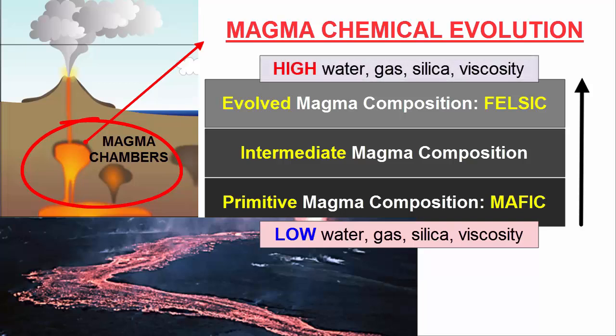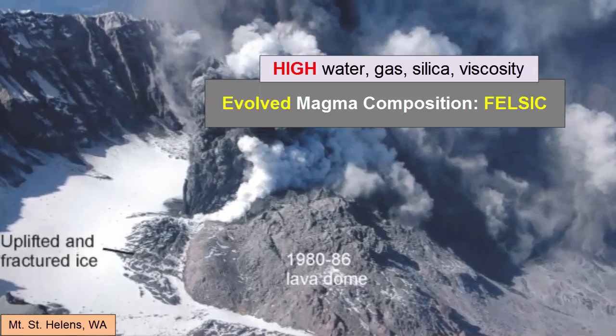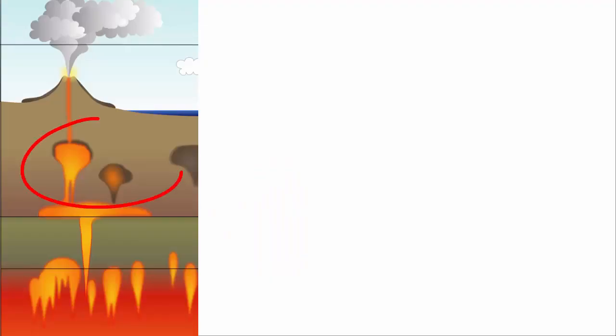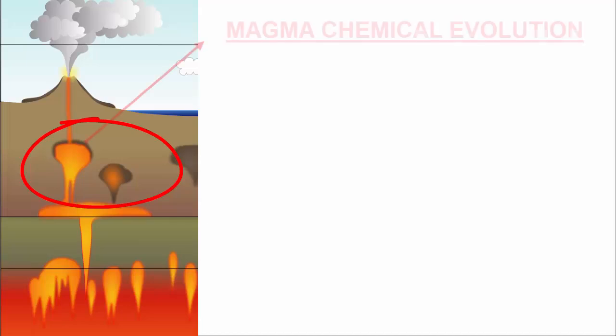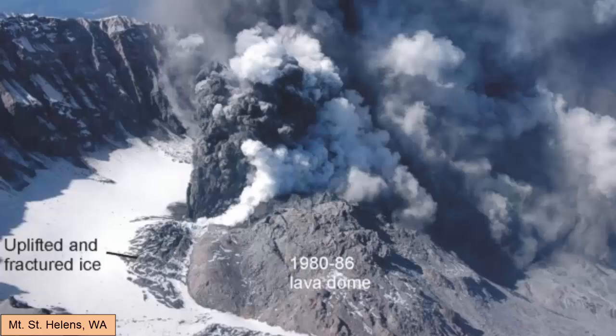Evolved felsic magmas are characterized by high water gas content, high silica content, and high viscosity. When erupted, these lavas are sticky and produce thick, slow flows, often plugging up the vents and trapping gases. Intermediate magmas sit between the two compositionally. For felsic magmas with high gas content trapped in a highly viscous magma, pressures can build, and the consequent eruptions can be powerful and destructive. The most explosive and dangerous eruptions in the world happen with felsic magmas. In general, the more time magmas spend in the crust, the more likely they will evolve from mafic to intermediate to felsic and thus be associated with explosive eruptions.